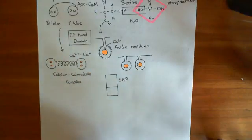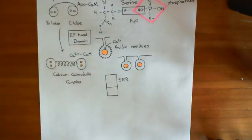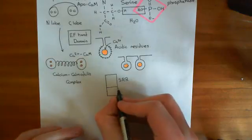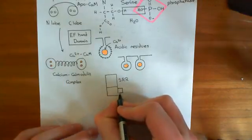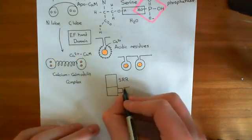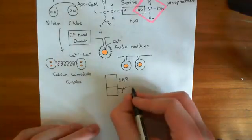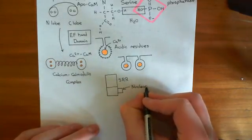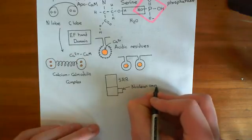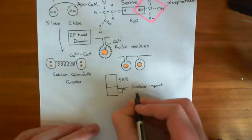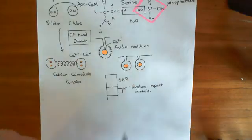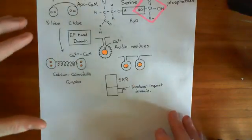When you remove those phosphate groups, the nuclear factor of activated T-cells changes conformation to make available a new domain — a new domain becomes available and becomes exposed. This is the nuclear import domain.